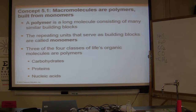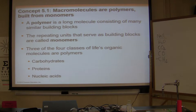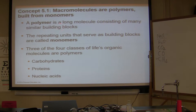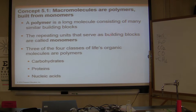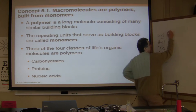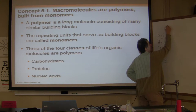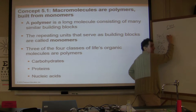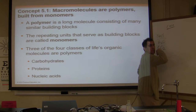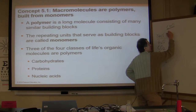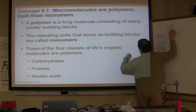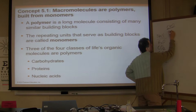Macromolecules are polymers built from monomers. Mono means single, poly means many — so single molecules put together make large macromolecules. A polymer is a long molecule consisting of many similar building blocks. The repeating units are called monomers. For carbohydrates, the monomer is monosaccharide — saccharide meaning one sugar molecule.